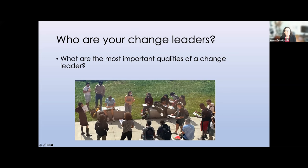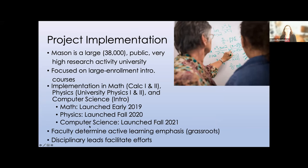Let me talk about the details of what we're doing. Mason is a large public university, now classified as very high research activity. We're working on an intro sequence in math, physics, and starting this semester in computer science, which sees a couple thousand students a semester. Math started this effort in 2019, physics in fall 2020, and just this fall computer science started. It's really based on the idea that faculty have to determine what the emphasis is going to be — if they're going to buy in, they need to grapple with what's going to be done.